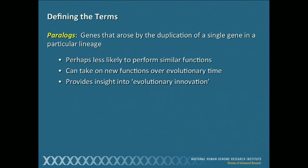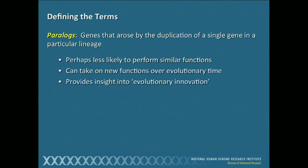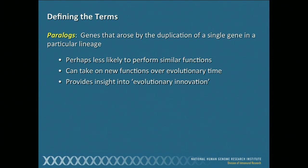The other term is called a paralog. Paralogs are genes that arose by the duplication of a single gene in a particular lineage. You can simply think of paralogs as similar genes in the same species that may have co-opted a pre-existing gene for new biological functions. We see that all the time over evolutionary time — the whole concept of evolutionary innovation.